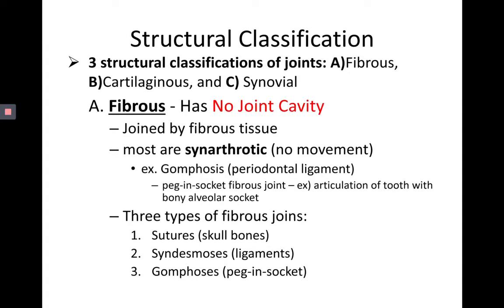For the structural classification, you also have three categories. The first two — fibrous and cartilaginous — are going to have no joint cavity. The last one, synovial, is going to be the one with the joint cavity. Let's look at fibrous first.